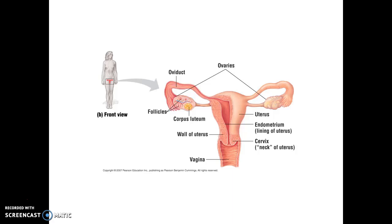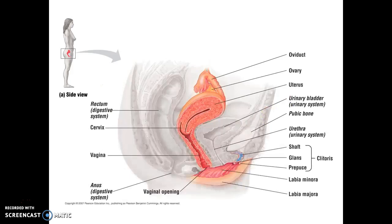The cervix is the interface between the uterus and the vagina. The vagina, also known as the birthing canal, is the path through which young are born during a typical vaginal birth. Here we see a side view of the female reproductive system, and here we can see a cross-section of the uterus and how it interfaces with the vagina.